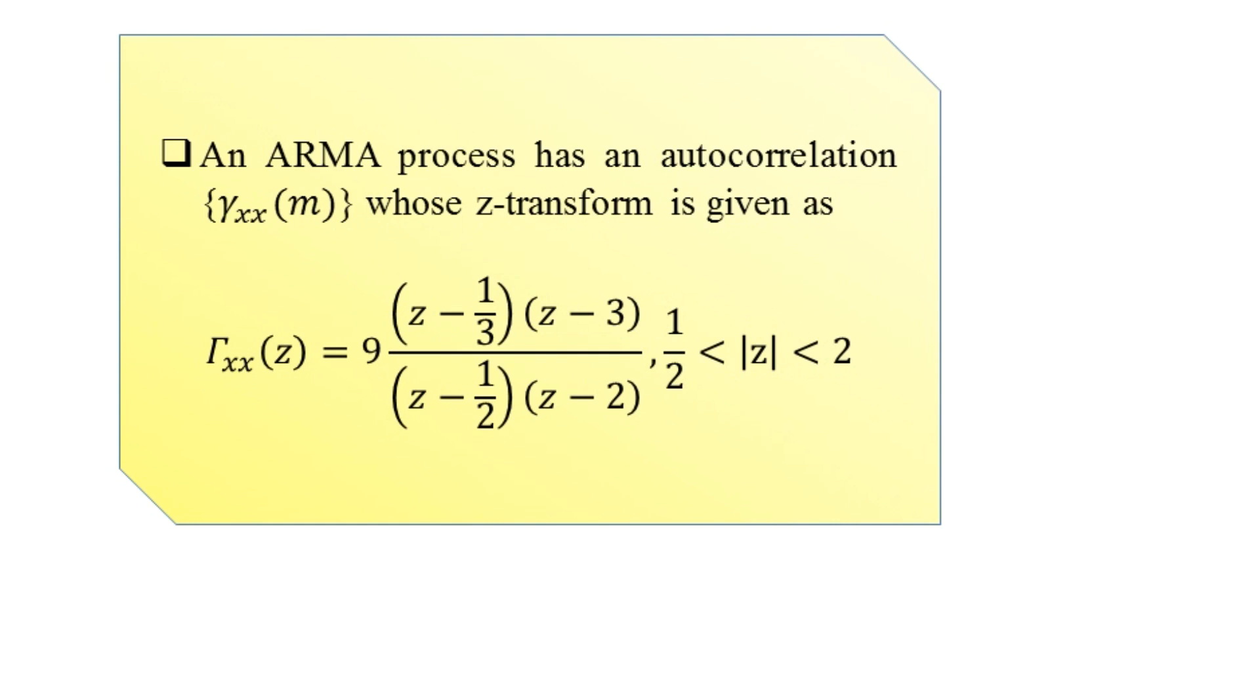where |z| lies in the range 1/2 < |z| < 2. So |z| is greater than 1/2 and less than 2.